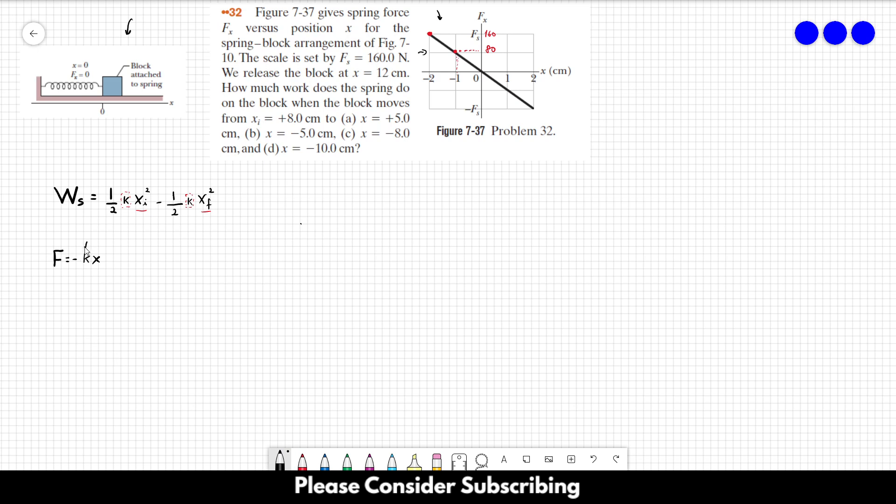So let's just isolate k first, so k is equal to minus f over x, and for this point, you could choose any point that you want. So it would be minus 80 divided by x, which in this case is minus 1 centimeter. Don't forget to convert it to meters, so this is going to be 8,000 newtons per meter.